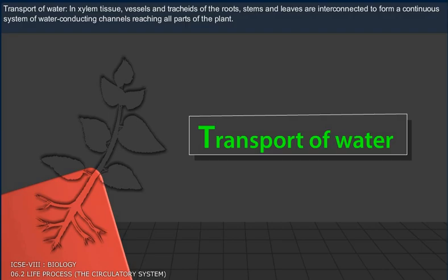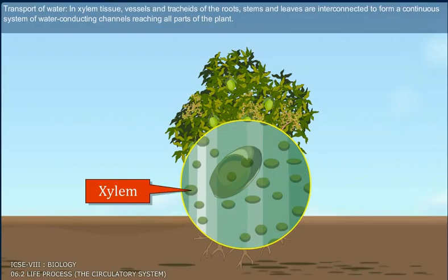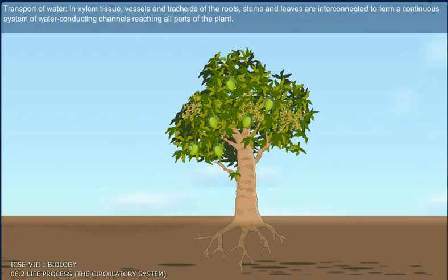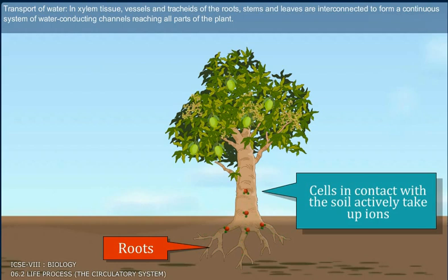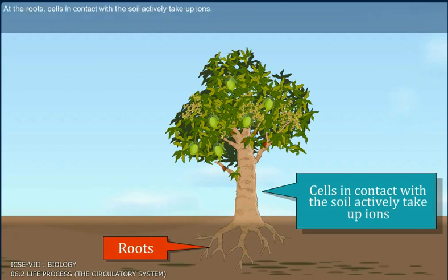Transport of water: In xylem tissue, vessels and tracheids of the roots, stems and leaves are interconnected to form a continuous system of water-conducting channels reaching all parts of the plant. At the roots, cells in contact with the soil actively take up ions.